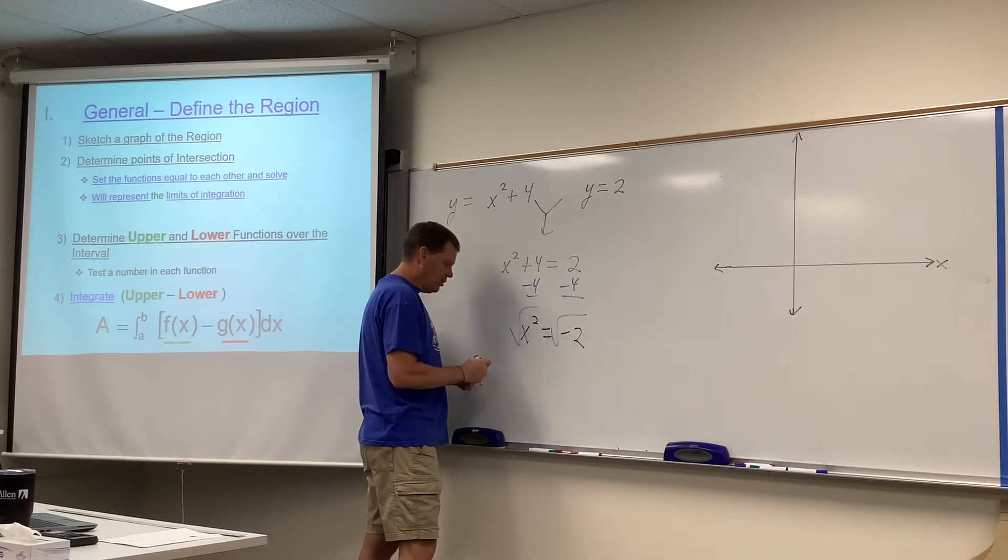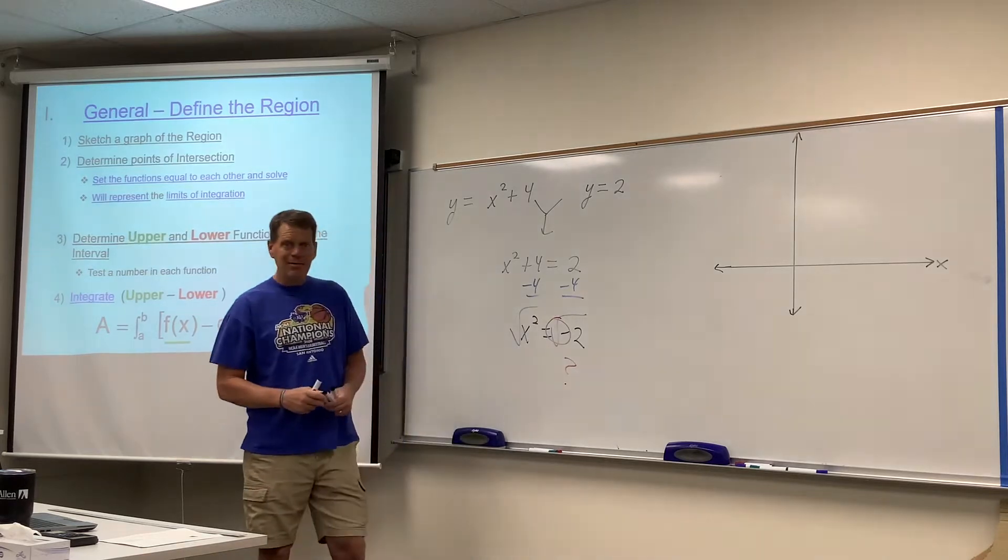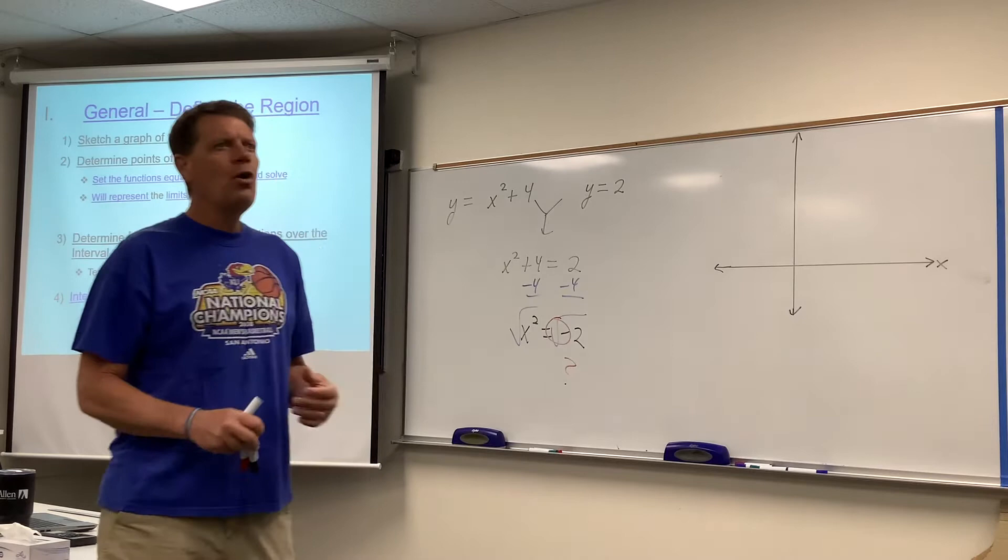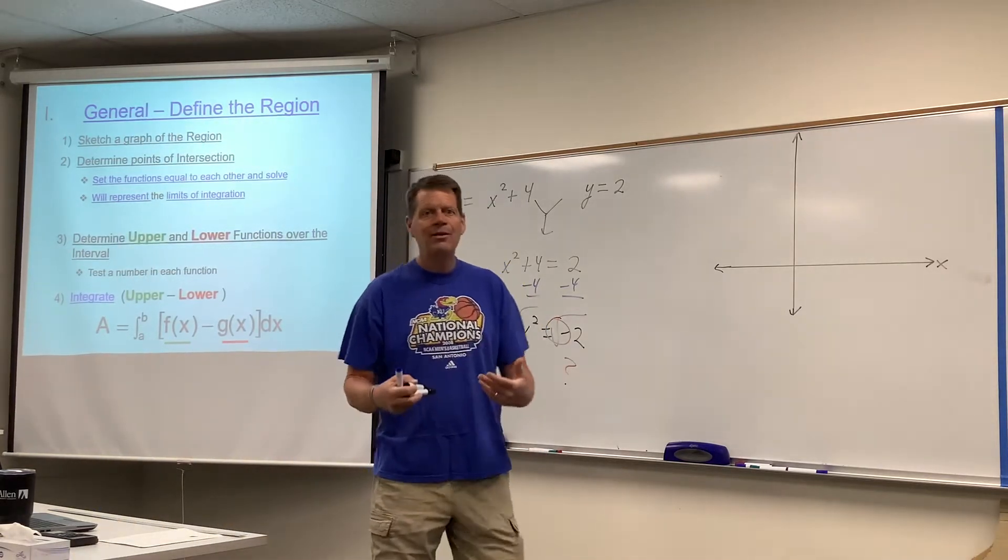And then hopefully this would be the point where you go, wait a minute, the square root of a negative number. What? That's imaginary. All right? So there are no real values of X where these two things intersect each other. It's an unbounded region.